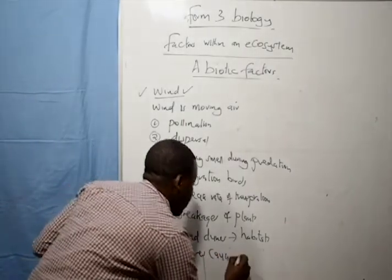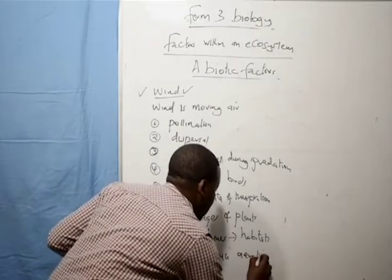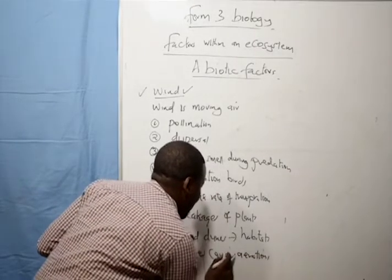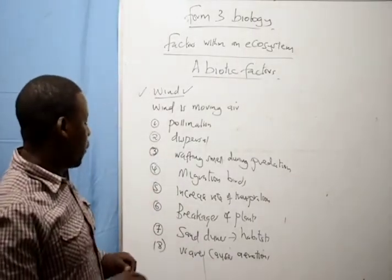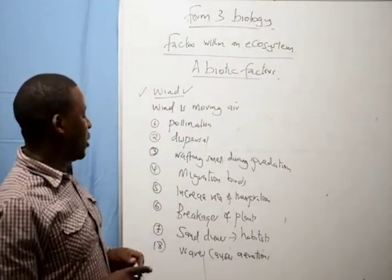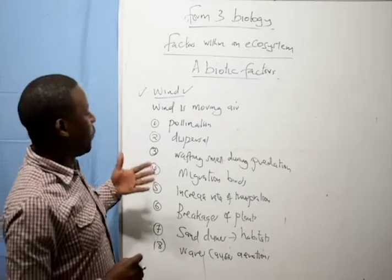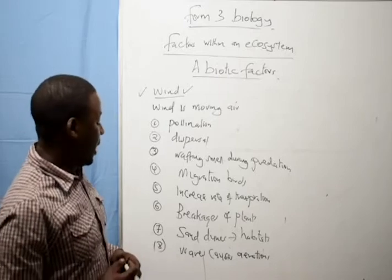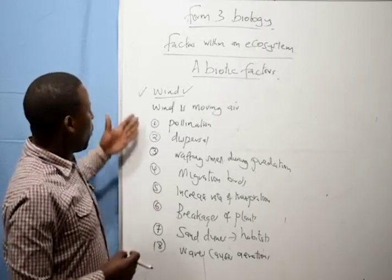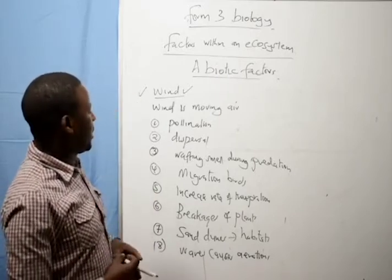And those waves cause aeration of water. Waves cause aeration of water in the sea. Therefore the water, lakes and sea can obtain enough oxygen for other marine animals or aquatic animals to survive on. Therefore wind is a very very important factor within an ecosystem.